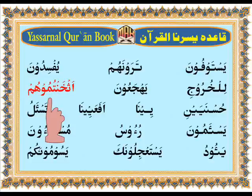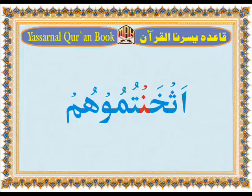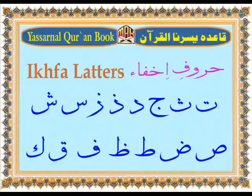Askhantumu'hum — in this word, hide the sound of Noon and suppress one letter into another. This is called Ikhfa. There are fifteen alphabets of Ikhfa. They are: Ta, Tha.